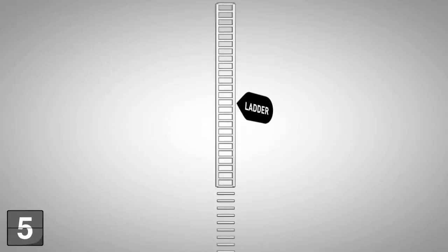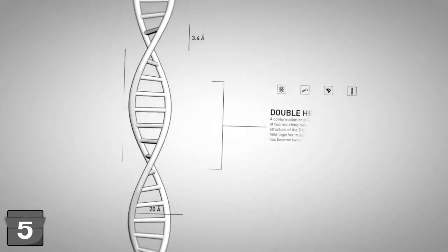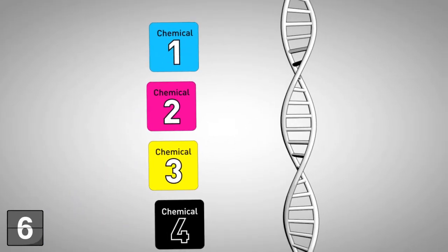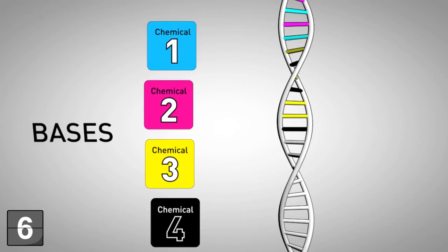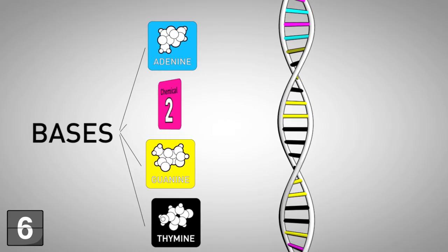DNA is shaped like a ladder that's been twisted, which is called a double helix. The steps of the ladder are made of four main chemicals called bases: adenine, thymine, guanine, and cytosine.